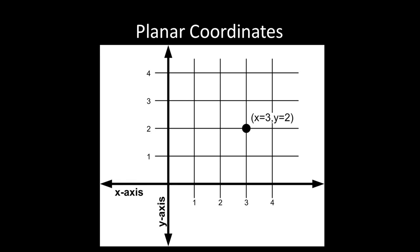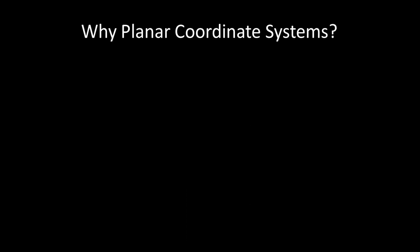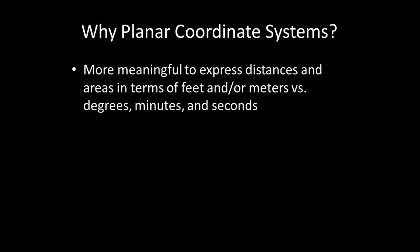Planar coordinates are based on the idea of Cartesian space and referenced on an x-y grid, where the x-axis represents east-to-west coordinate values and the y-axis represents north-to-south coordinate values. In this example, a point is referenced at an x value of 3 and a y value of 2 in the positive number space. Planar coordinate systems are more efficient and provide better meaning for measurement than spherical coordinates — for example, in surveying it is more meaningful to express distances and areas in feet or meters versus degrees, minutes, and seconds.